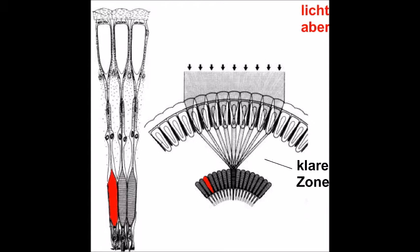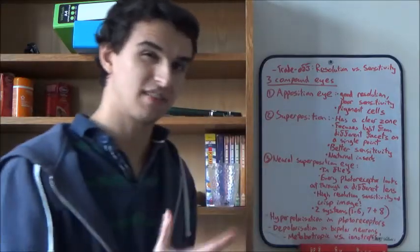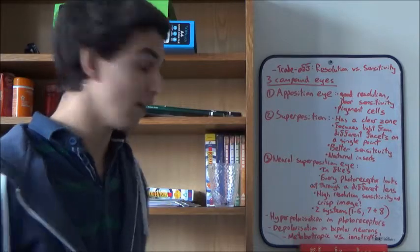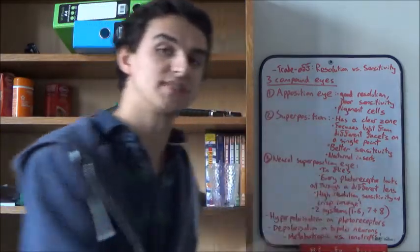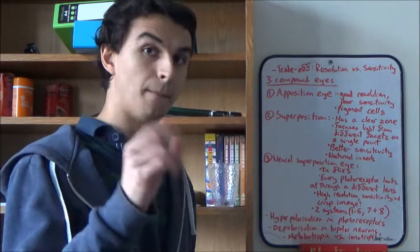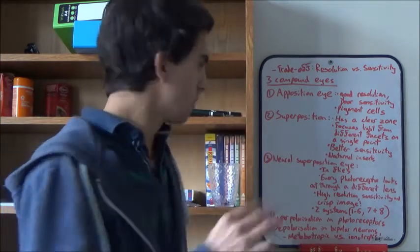But it means you have a much more sensitive eye now, because you've basically increased the aperture, because lots of light from loads of different lenses, loads of different facets, are feeding into a single rhabdom. They're all converging on a single rhabdom. So more light is entering, so there's a greater chance of photons being absorbed. And the resolution of these eyes are pretty good as well. But as I said before, the light leakage that we see due to the lack of pigment cells leads to a bit of a blurred image here. But it's still pretty good.